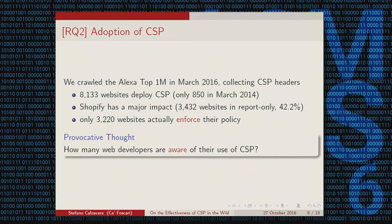Moving to the second research question, we wanted to understand current CSP deployment. We crawled the Alexa Top Million websites in March 2016 and collected CSP headers. We found more than 8,000 websites using CSP — an approximate twofold increase over a previous study two years ago. However, the deployment is more limited than it appears, because web development frameworks like Shopify account for about 42% of all policies in our dataset. Stripping away these default framework policies, only around 3,000 websites actually enforce a content security policy, raising questions about how many developers are truly aware of CSP on their own websites.